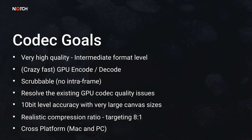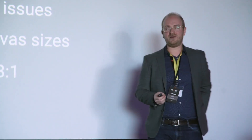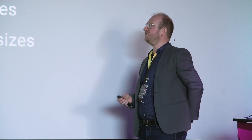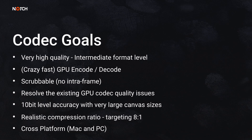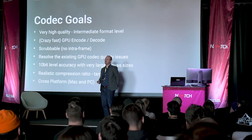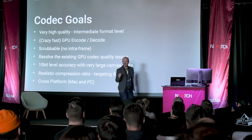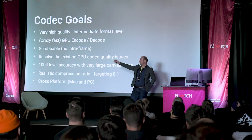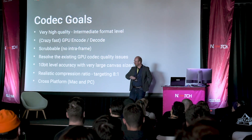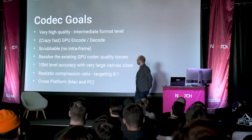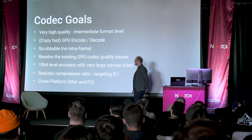If it's going to be an intermediate format, it needs to be very high quality. Traditionally you've been using things like ProRes for those types of activities, and we need to be up there in terms of that quality. We also need to have crazy fast encode and decode, because the size of the canvases you are all working on has just ballooned over the last five years, with the advent of pixel pitches around 0.8mm, 20K projectors, and 30 of them all in a row — the canvases are just getting huge.